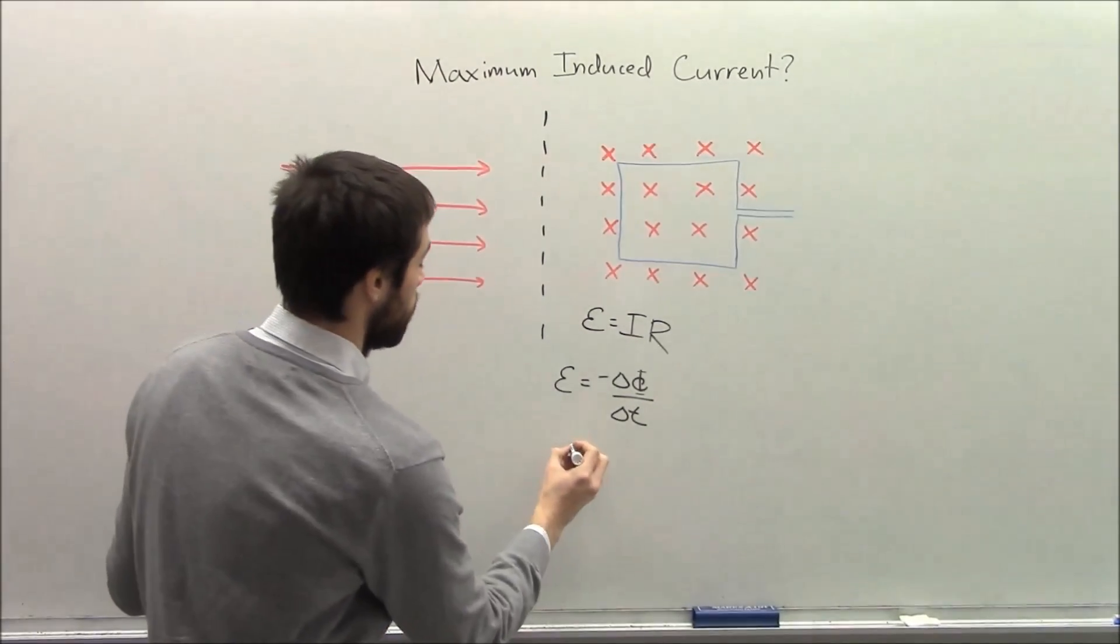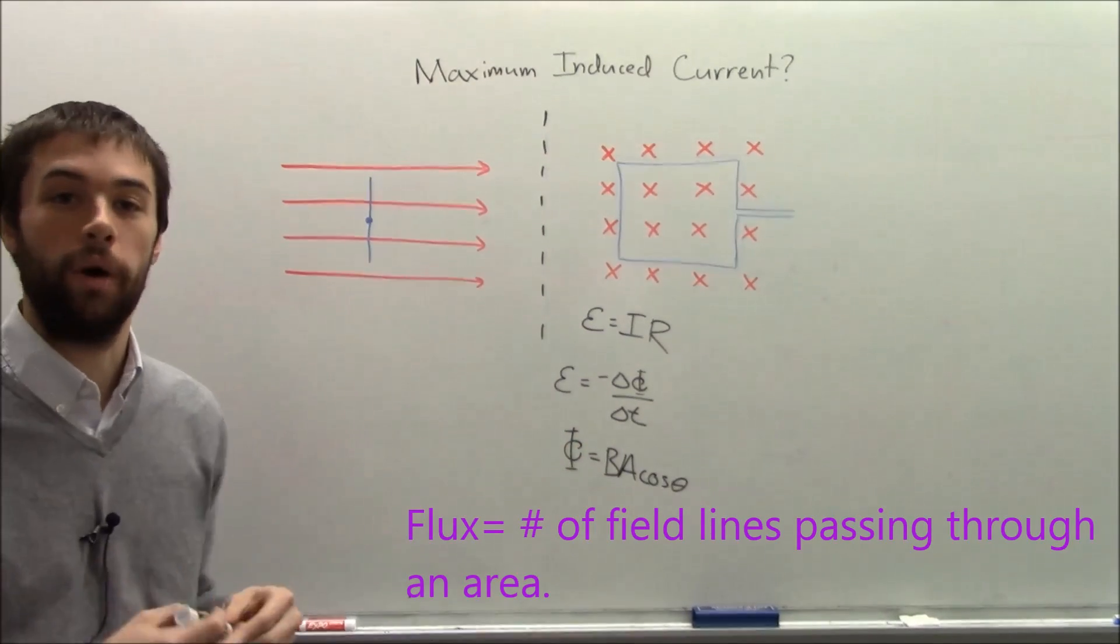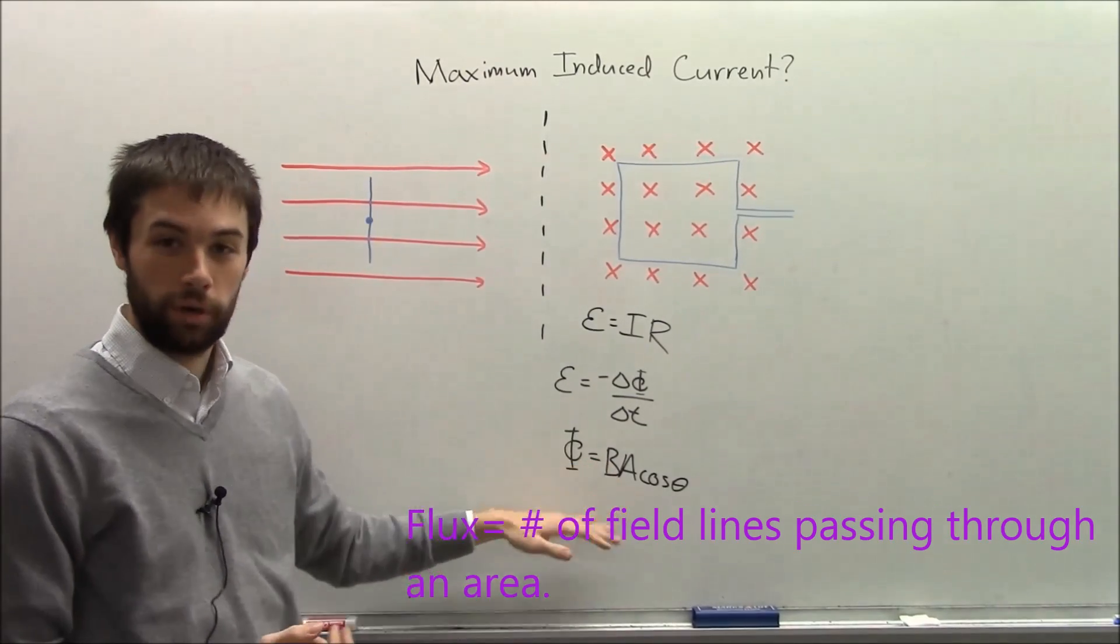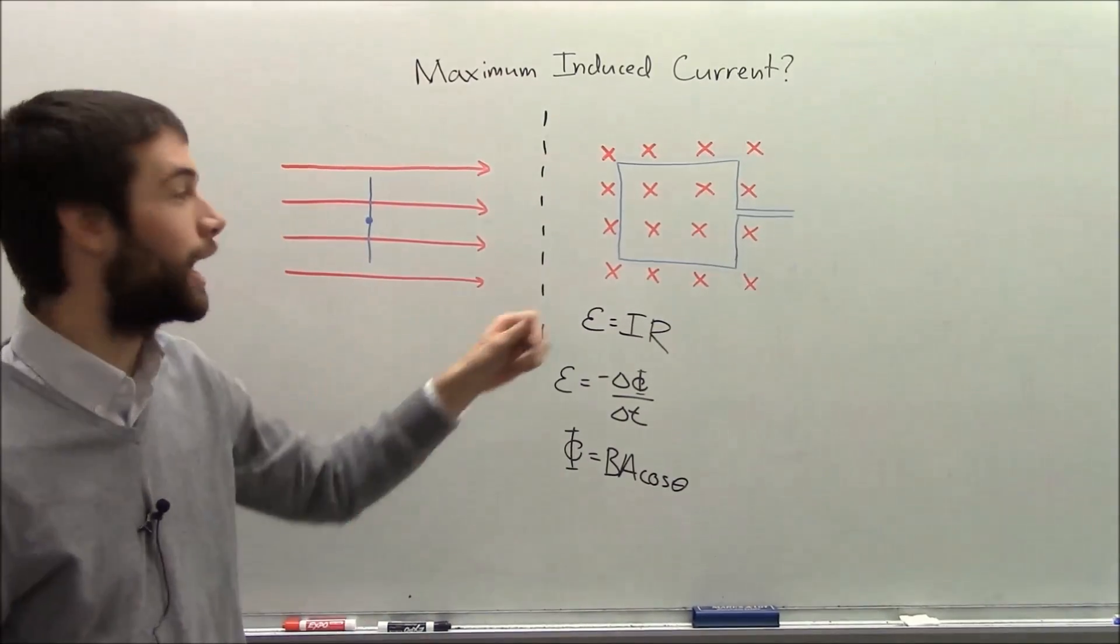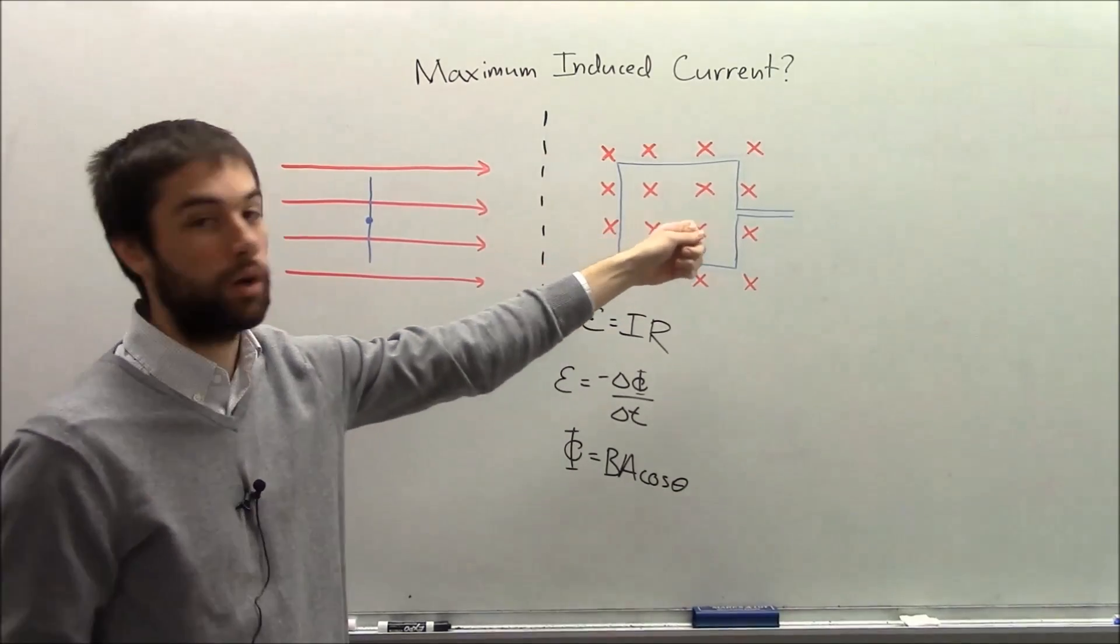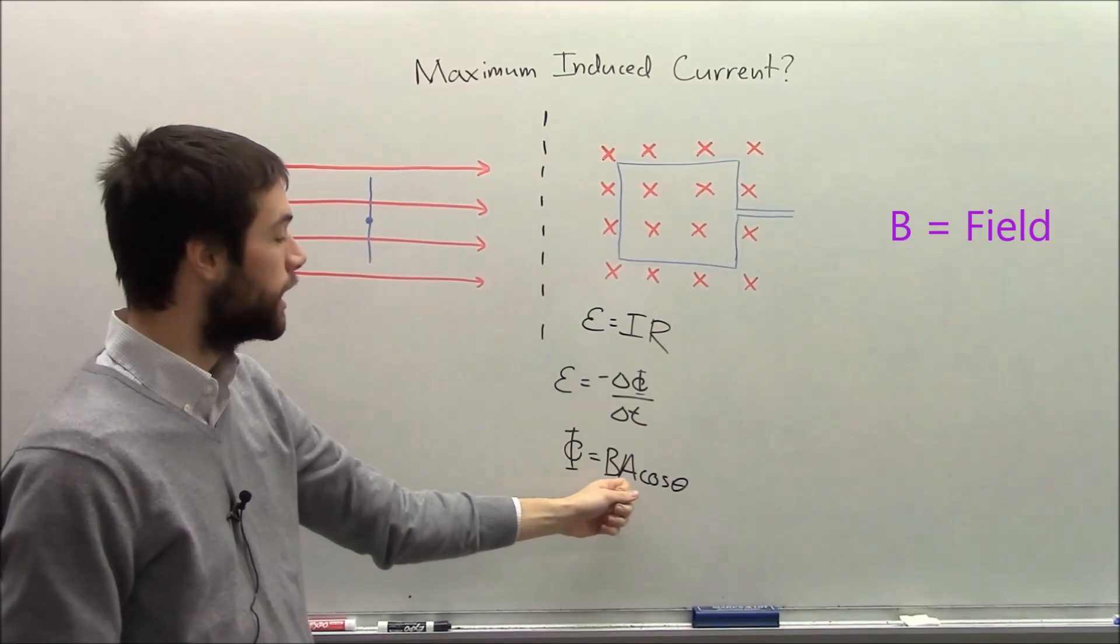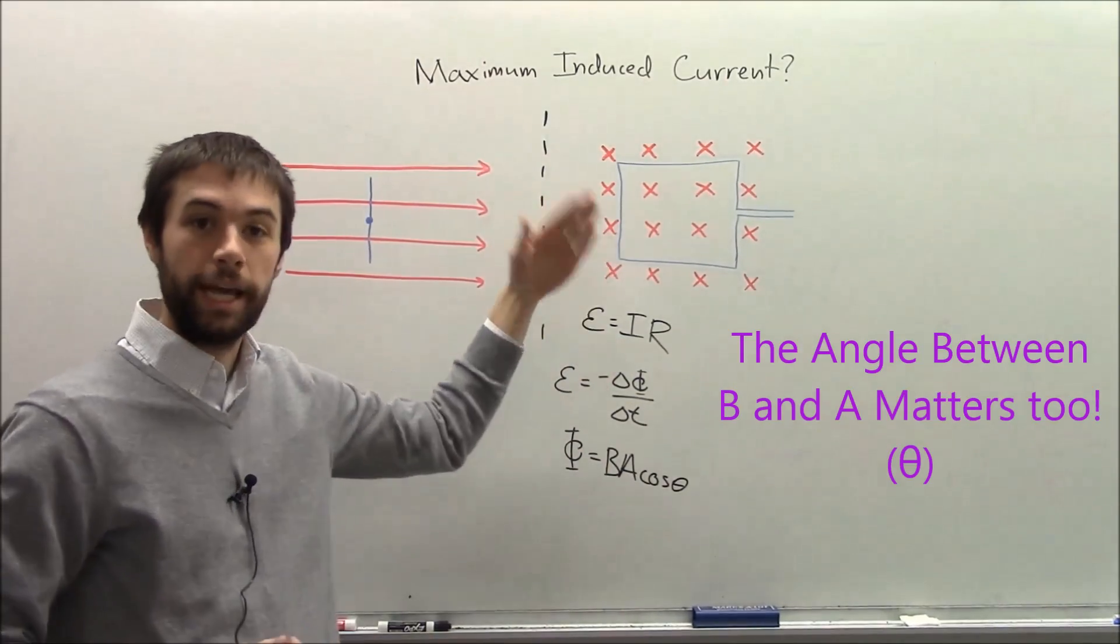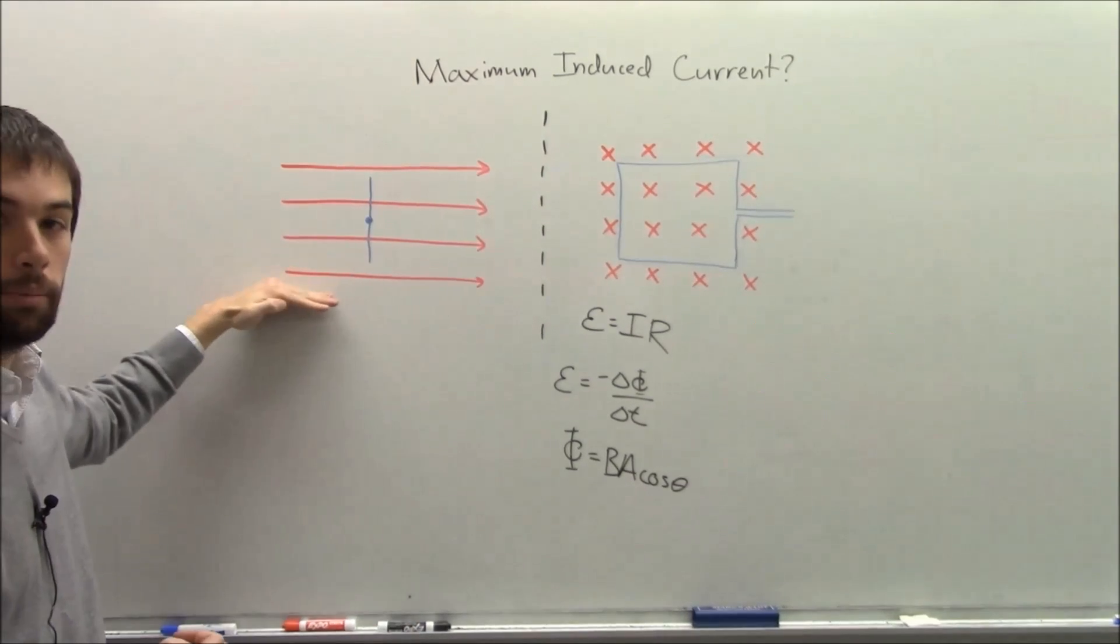And we're going to write one more equation on the board here. If we want to know how fast flux changes, we need to remember what flux is. Flux is BA cos θ. What that means is we're going to look essentially at how many of our arrows here poke through our loop and how big the loop is. So how big the field is contributes, how big the loop is contributes, and also the orientation of the loop in the field matters.